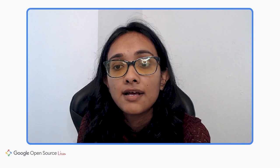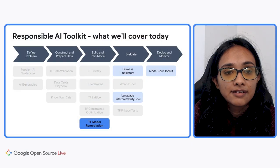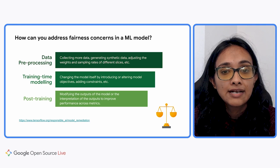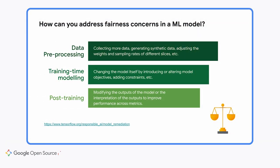Now Bhakti will explain how to use the model remediation library to address some of these issues. Once you've identified bias in your model, there are several ways to address fairness concerns. You could tackle this at the data preprocessing level, where you can collect more data or up-sample data to improve performance over minority slices. Or you could add special constraints or losses to your model as training time modeling techniques. The TensorFlow Model Remediation Toolkit offers several training time techniques to mitigate bias in ML models.